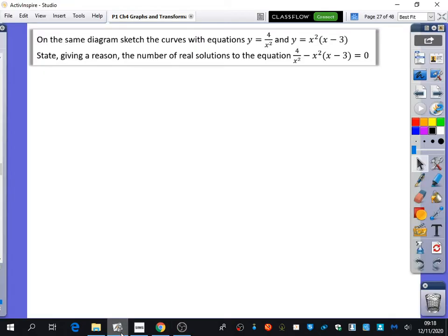So if you go to this question in your booklet, we're going to do this one that we have as well. We almost did this last lesson, we just didn't quite have enough time. So this time it says, on the same diagram, sketch the curves with equations y equals 4 over x squared, and y equals x squared times x minus 3. We'll just do that before we even read the next part of the question.